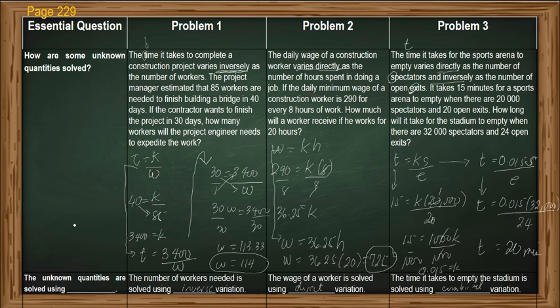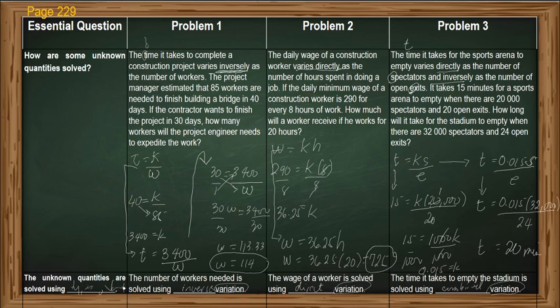Let us now answer the essential question by looking at the pattern. We dealt with variation problems but with different types of variation. So how are some unknown quantities solved? Some unknown quantities are solved by using the different types of variation. Our generalization is that some real-world quantities in problems are determined by using the appropriate type of variation.